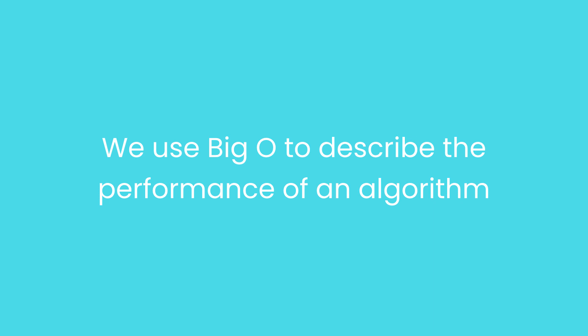Just because your code executes quickly on your computer doesn't mean it's going to perform well when you give it a large data set. So that's why we use the big O notation to describe the performance of an algorithm.